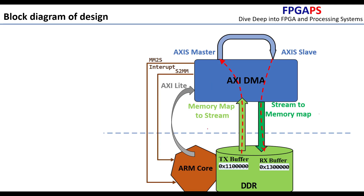For today's video, we are going to run the AXI DMA in two different modes. The first mode is the polling mode. The ARM core writes known data — for example, values 1 to 100 — into the TX buffer, then configures the DMA with data movement parameters and runs it. To determine when the data movement is complete, the ARM core continuously reads and checks the status register in the DMA engine, polling in a loop until the DMA is done.